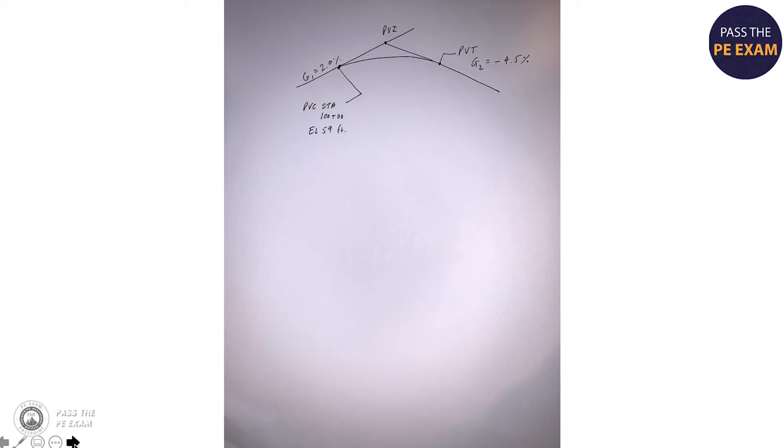So the first step that I take with any curve problem or really any problem like this, where there are measurements involved, is I would sketch out the problem. Even if a sketch is provided, I draw it out on my own typically because it helps me to visualize and think through the problem easier. So here you can see that I've sketched out the curve and I've outlined it with all the information given, the grades, the PVC station, elevation, and so forth.